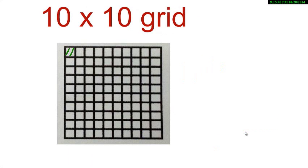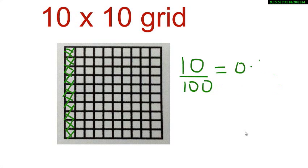If I color one square, what does it represent? It represents 1 by 100, that is 0.01. If I color 10 squares, it represents 10 out of 100, that is 0.10 or 0.1.